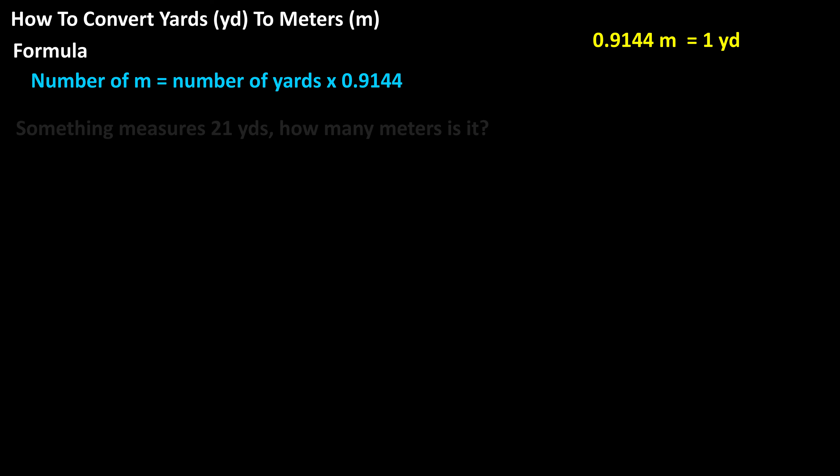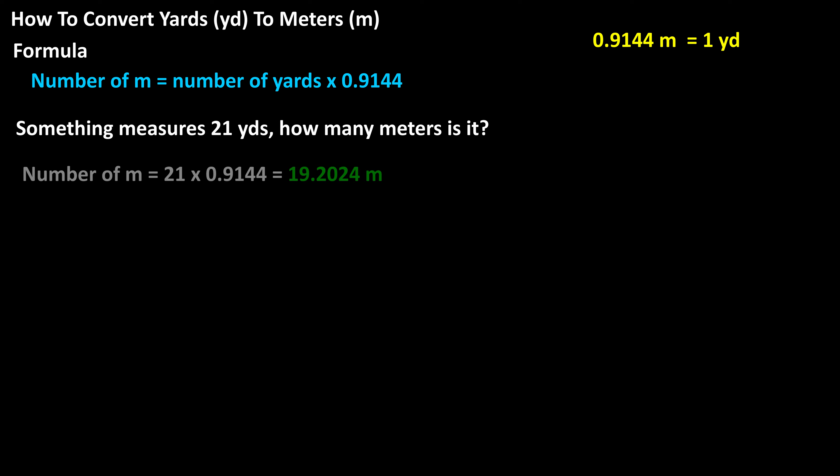As an example, if something measures 21 yards, how many meters is it? Using the formula, we have the number of meters equals 21 times 0.9144, which calculates to 19.2024 meters.